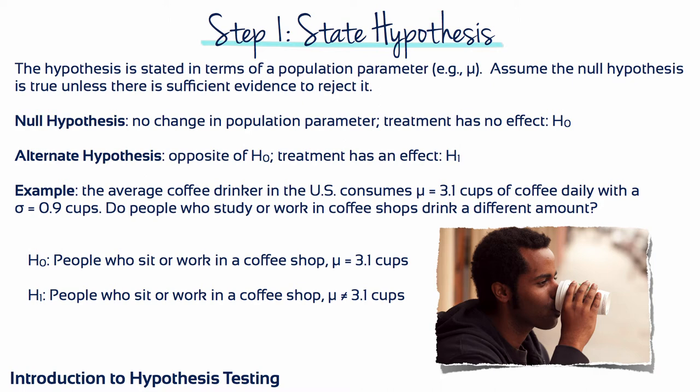The null hypothesis states that people who sit and work in a coffee shop drink a mean of 3.1 cups of coffee. In other words, the null hypothesis is saying that studying or working in a coffee shop has no effect on your daily consumption. Whereas the alternative hypothesis says that people who sit and work in a coffee shop have a mean that's not equal to 3.1 cups — maybe they drink more, maybe they drink less, but it's not the same.